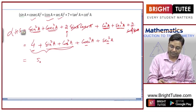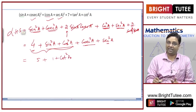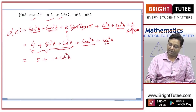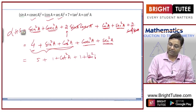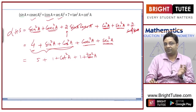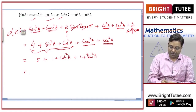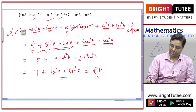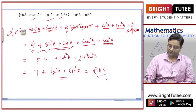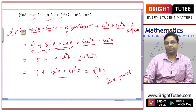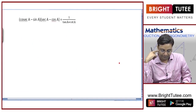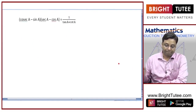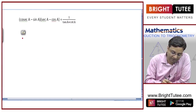Now use cosec²A = 1 + cot²A and sec²A = 1 + tan²A. Substituting: 5 + 1 + cot²A + 1 + tan²A = 7 + tan²A + cot²A, which is the right-hand side. Hence proved.